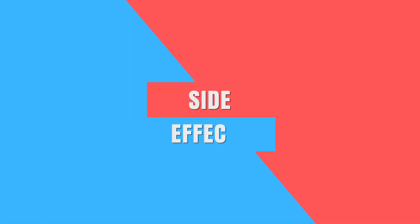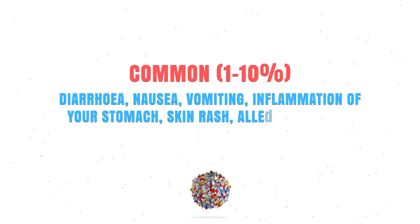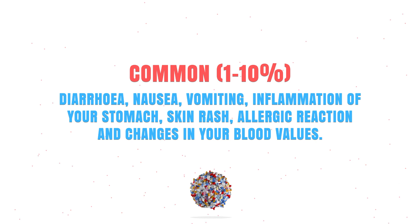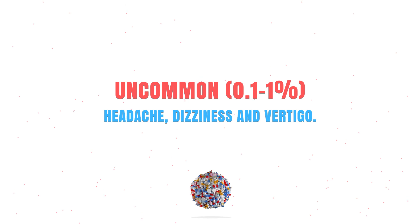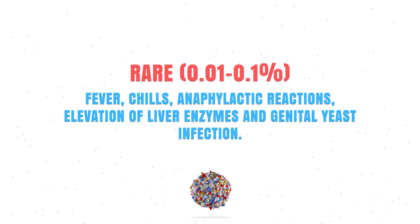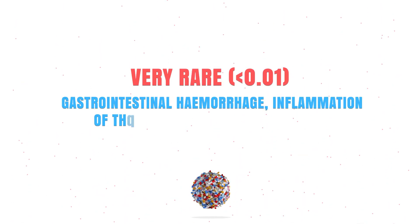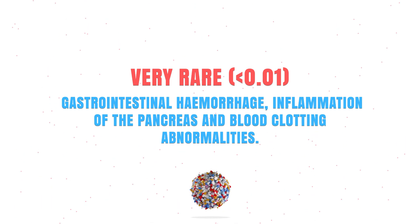Ceftriaxone can be a very effective drug but unfortunately can also cause side effects. I will discuss the most common ones here, but for a complete list always ask your doctor, your pharmacist, or check your leaflet. Commonly it may cause diarrhea, nausea, vomiting, a skin rash, an allergic reaction, or changes in your blood values. Uncommonly it might cause a headache, dizziness, or vertigo. Rarely it can cause a fever, chills, or a genital yeast infection. Very rarely it might cause gastrointestinal hemorrhaging, inflammation of your pancreas, or blood clotting abnormalities.